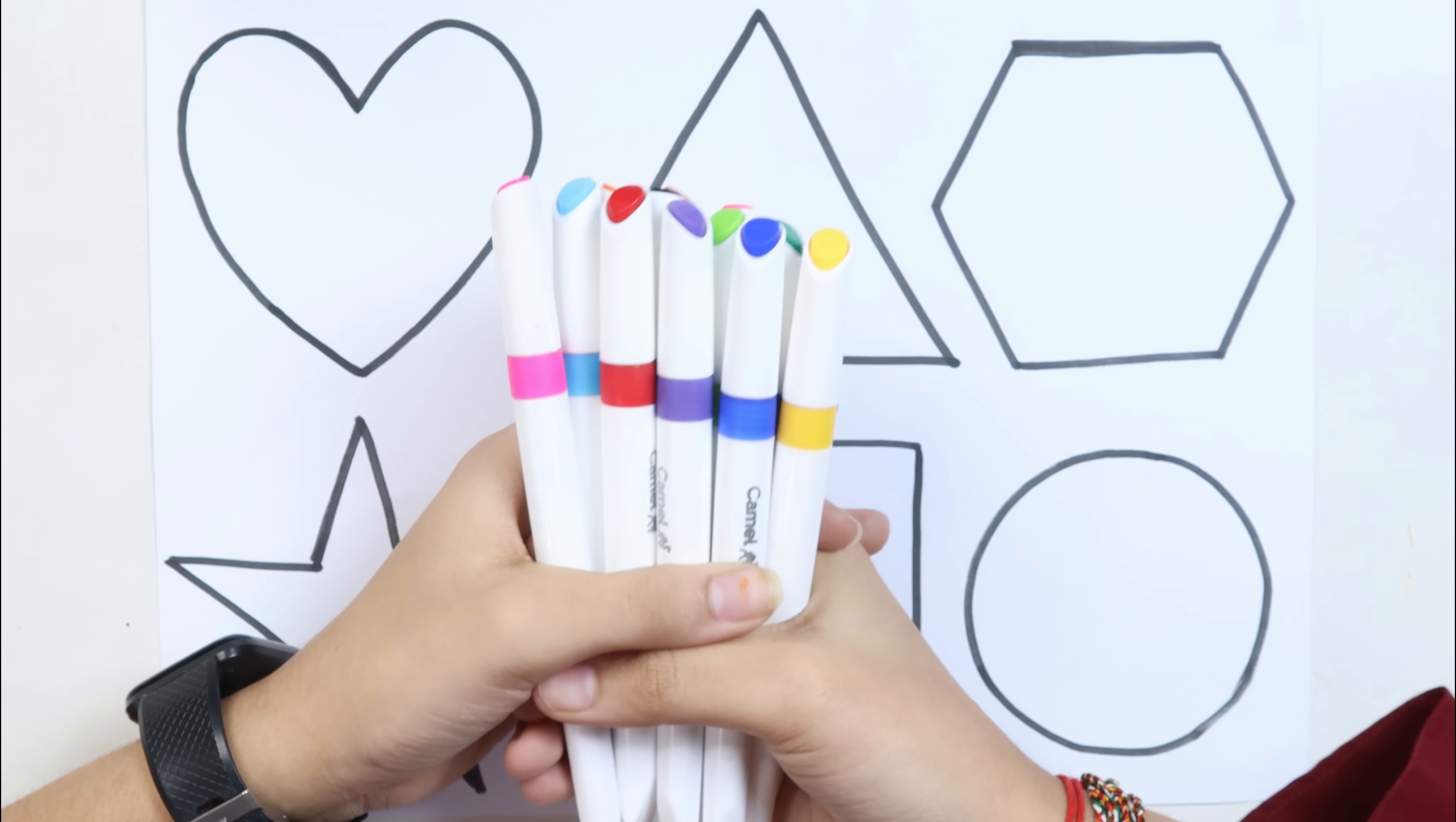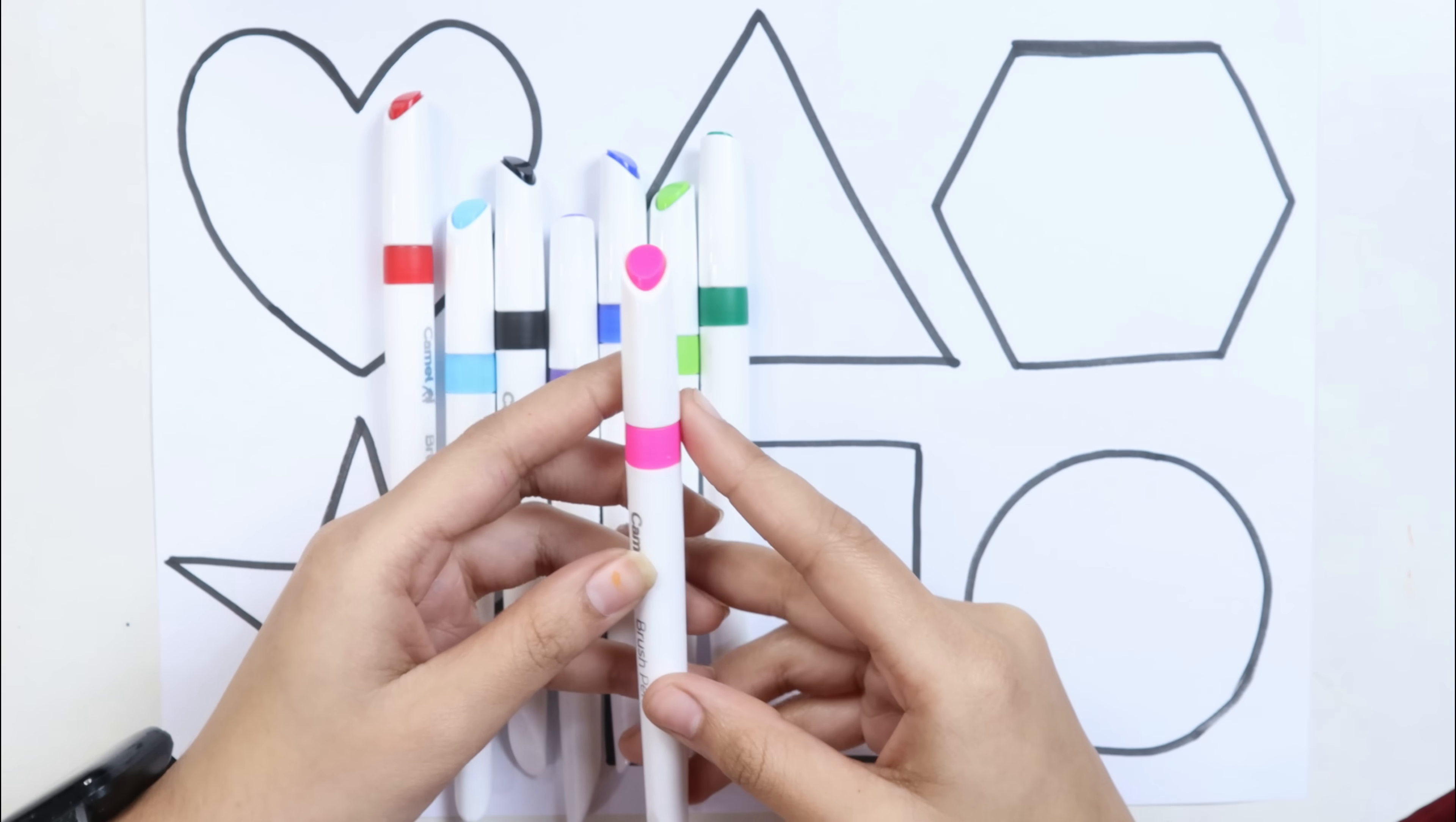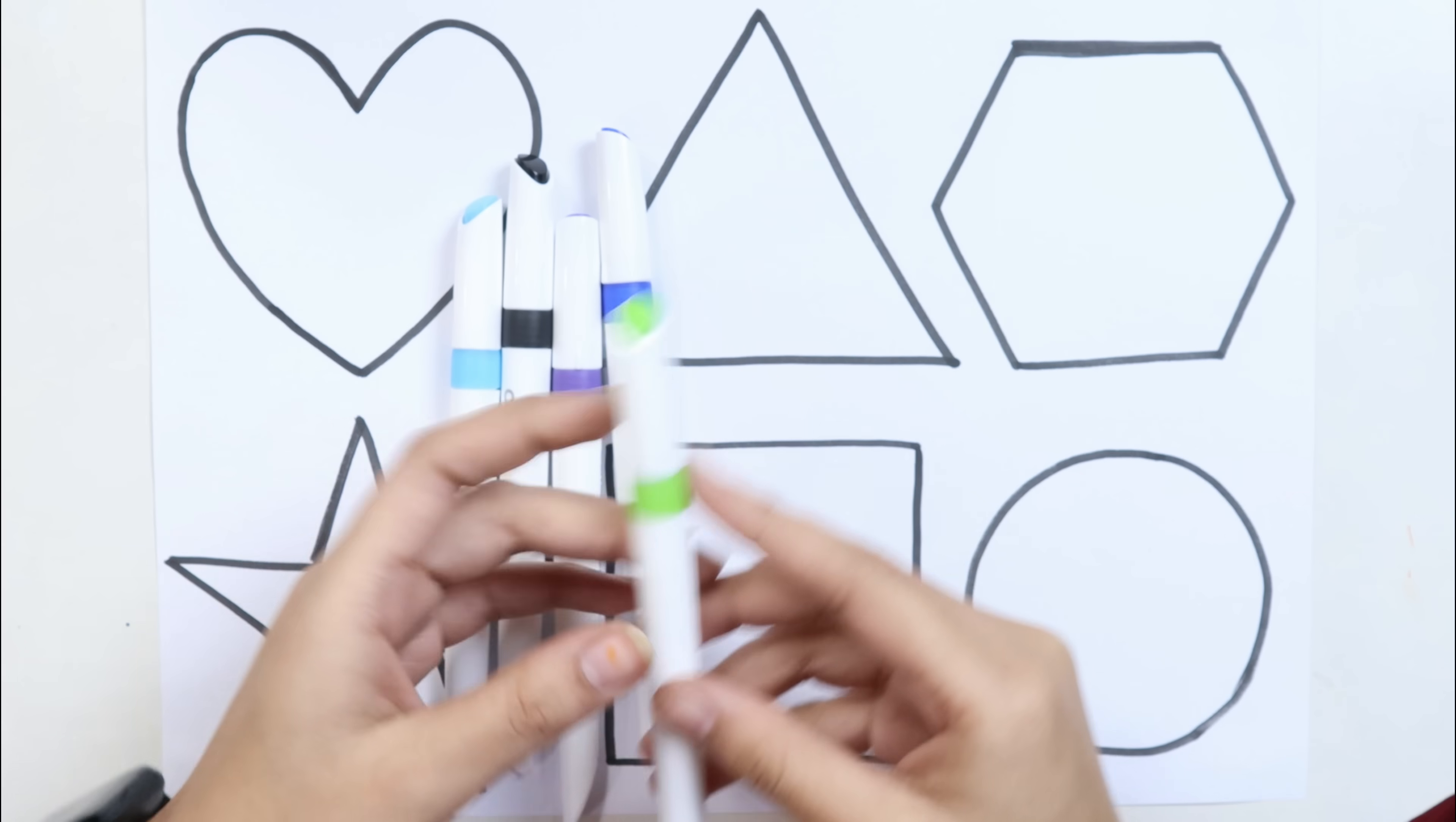Let's learn some colors. Yellow color, pink color, brown color, orange color, light pink color, red color, dark green color, light green color.